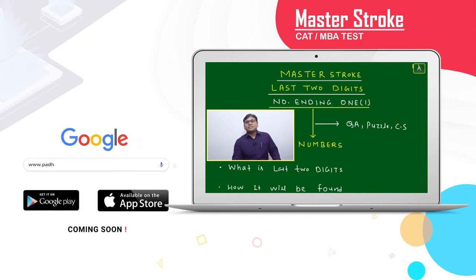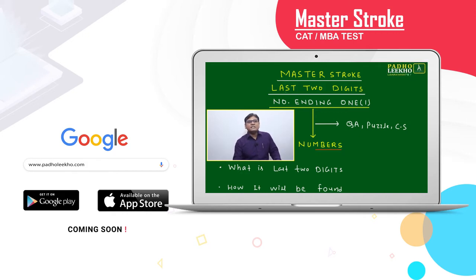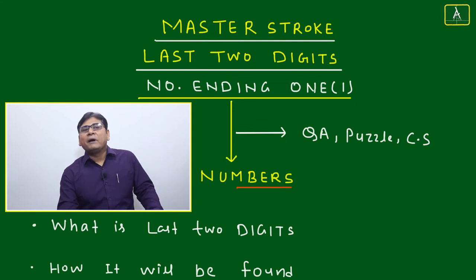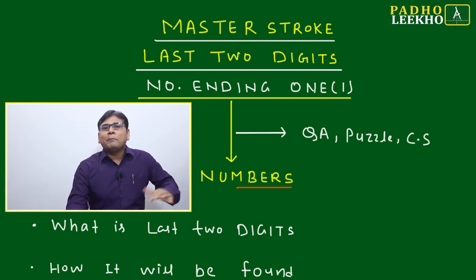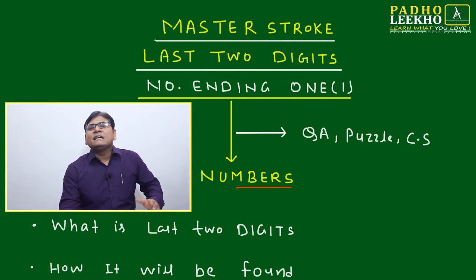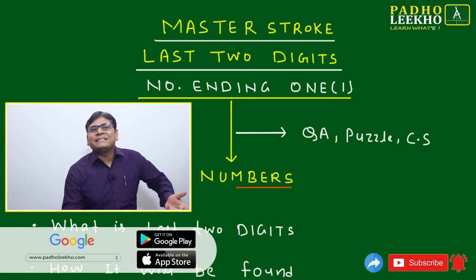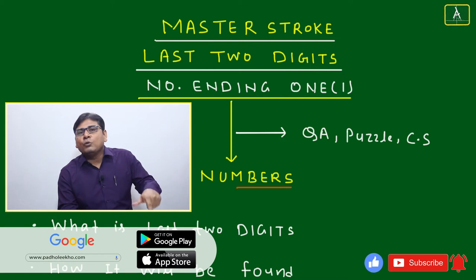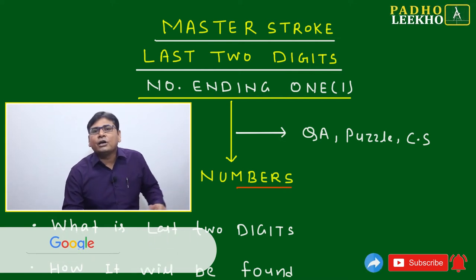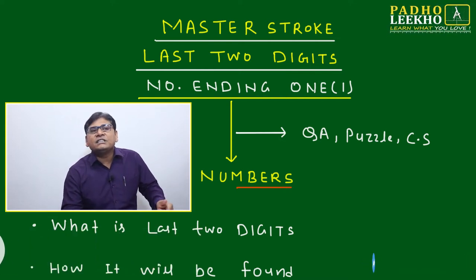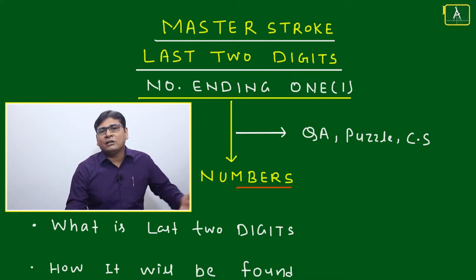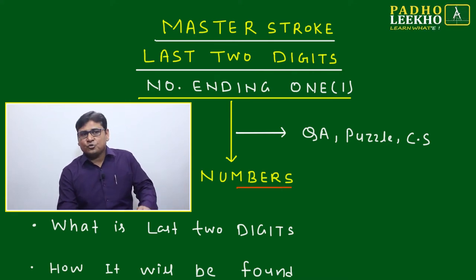Welcome to this Master Stroke session on Quantitative Ability (QA). This session deals with numbers — specifically the last two digit technique for numbers ending with one. Previous sessions covered numbers ending with zero; separate Master Stroke sessions will cover numbers ending with two, five, or other digits.